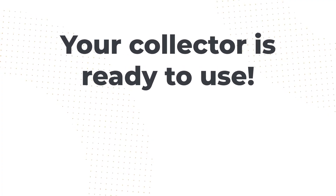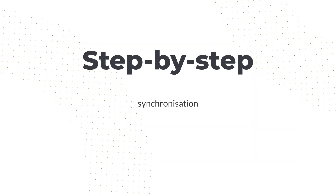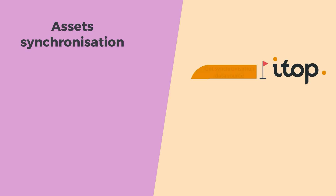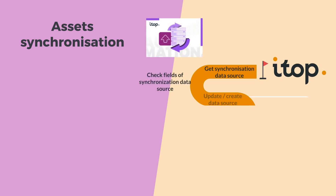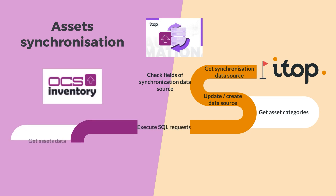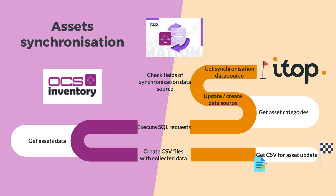Your collector is now ready to use and will automatically synchronize your data from OCSNG. Let's dig into the step-by-step synchronization. Before collecting data from OCS, the ITOP Data Collector gets the synchronization data source, checks its fields, and updates or creates a new data source if needed. Then asset categories are selected and SQL requests to OCSNG are created based on the required categories. Assets data is retrieved from OCSNG by the Data Collector, which creates CSV files with the collected data and sends them to ITOP for asset updates.